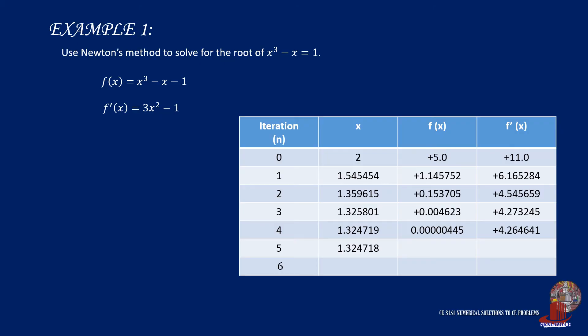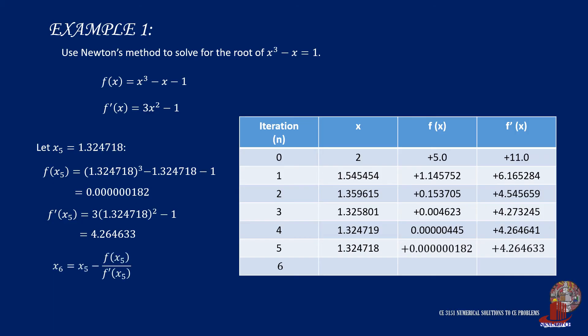Let's continue and iterate another by using x sub 5, which is 1.324718. The function of x is computed as 1.82 times 10 raised to negative 7, and the differential value is still positive 4.264633. Use these values into the formula once more, and x sub 6 is computed as 1.324718.